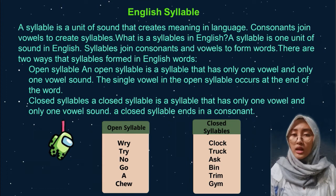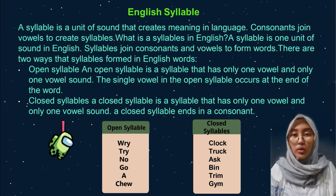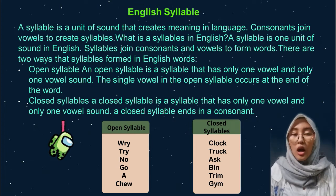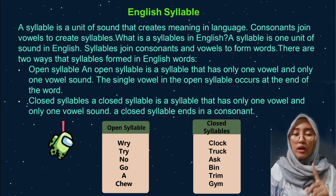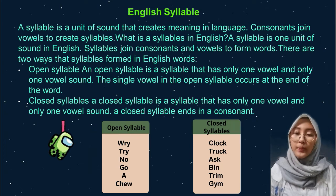What is a syllable in English? A syllable is one unit of sound in English. There are two ways syllables form words in English. The first is open syllables. An open syllable has only one vowel and one vowel sound, and the single vowel occurs at the end of the word. For example: write, try, no, go.